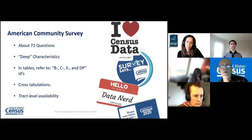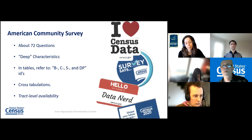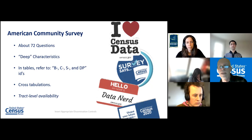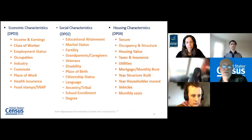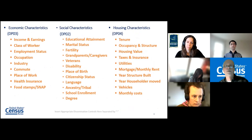Data can really only be reliably retrieved down to a tract level. Tract level is our showcase geography — it was invented to release demographic statistics. Some people retrieve data down to a block group level, but I don't recommend that usually because the margins of error are so high that it renders the data not very useful or reliable. That said, some people do go ahead and use block group data.